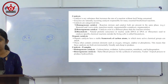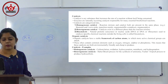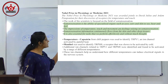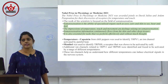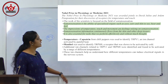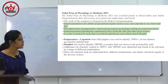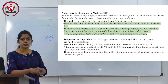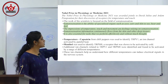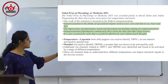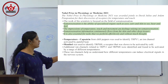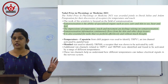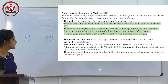Nobel Prize in Physiology or Medicine 2021 was awarded for discoveries of receptors for temperature and touch. The work is focused on the field of somatosensation — the ability of specialized organs such as eyes, ears, and skin to see, hear, and feel. Impressions of temperature, touch, and movement rely on somatosensation. Capsaicin from chili peppers and menthol were used to identify these receptors. The receptor is called TRPV1. Somatosensation is very important for the award.